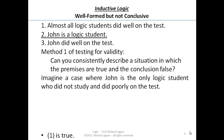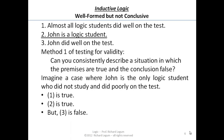In that case, premise one is true, because almost all the logic students did well on the test — out of a class of 25 or 30, there was only one guy who didn't do well. And two is also true: John is a logic student. However, in that case, three is false. So it's possible for those premises to be true and the conclusion false. Not likely, but it's possible. So this is not a valid argument.